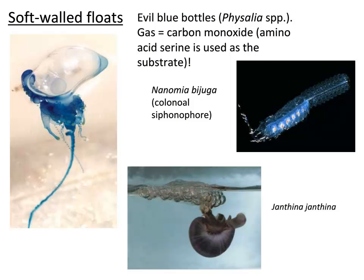Some examples of soft-walled floats include bluebottles, colonial siphonophores, and Janthina janthina — the purple snail sometimes washed up on shores. Bluebottles have a gas float filled with carbon monoxide — bizarrely reactive — which is a breakdown product of the amino acid serine; the same gas is seen in siphonophores. Janthina uses a different strategy: it produces mucus bubbles, aerates them, and generates a mucus bubble raft as a float.